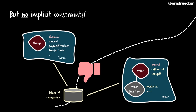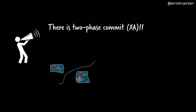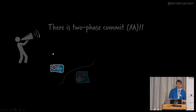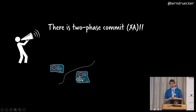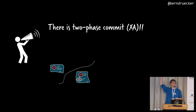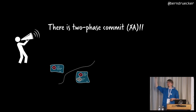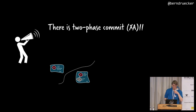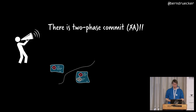Now it starts to get more interesting. You could think: let's do two-phase commit, XA transaction, or three-phase commit. Who knows two-phase commit transaction protocols? A lot of people know distributed transactions, but who actually uses that? Essentially none. That's a typical thing I see out there — it's very well known but nobody really uses it.